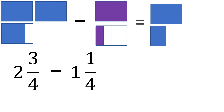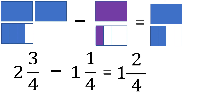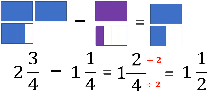Now let us subtract the fractions: copy the denominator 4 and subtract the numerators — 3 minus 1, that's 2. And the whole numbers: 2 minus 1 is 1. So the answer is 1 and 2 fourths. But 2 fourths can be divided by 2 to reduce it to its lowest term: 2 divided by 2 is 1 and 4 divided by 2 is 2. So the final answer is 1 and 1 half.